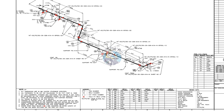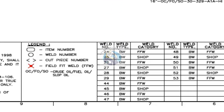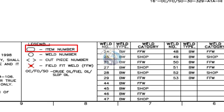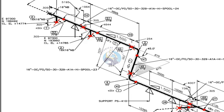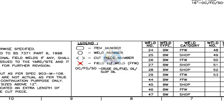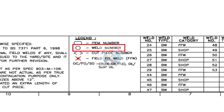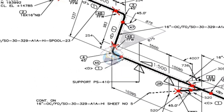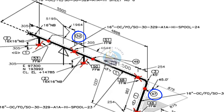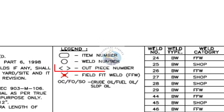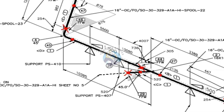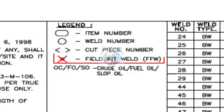Now let us explore other details in the drawing. Look at the legends. The oval shape represents the item number. The circular shape represents the weld number. The bracket symbol represents the pipe cut number. The X symbol stands for field fit weld.